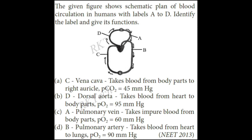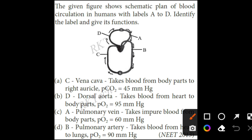Vena Cava takes blood from body parts to the right auricle. The PCO2 is 45 mmHg. Level D was suggested as dorsal aorta, but that is wrong. Level A is the pulmonary vein, which takes pure oxygenated blood. So the answer is: C is Vena Cava, and it carries deoxygenated blood from body parts to the auricles, with a CO2 pressure of 45 mmHg.